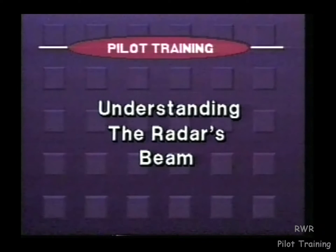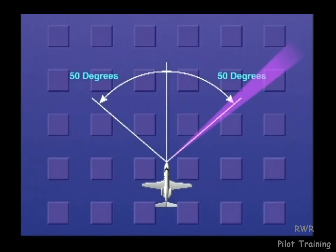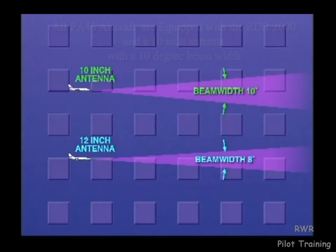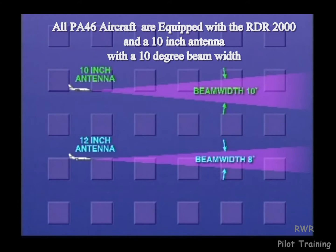In order to properly operate a weather radar, it is essential that you have an understanding of the characteristics of a radar beam. The radar beam searches a horizontal slice of airspace 50 to 60 degrees to each side of the aircraft's longitudinal axis. The size of the antenna is the main factor in determining the width, in degrees, of the radar's radiated beam. The larger the antenna, the smaller the beam width, and more importantly, the smaller the beam width, the more accurately the system can display weather returns, especially at longer ranges.